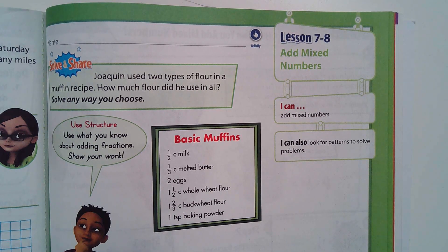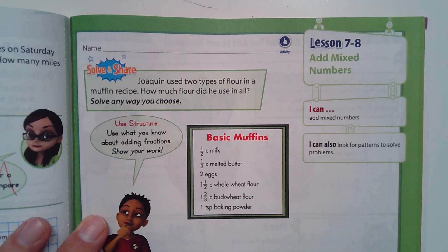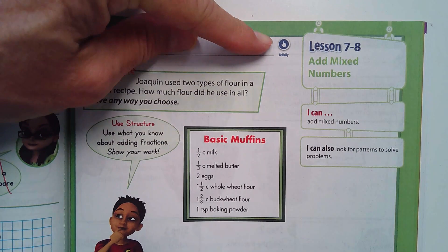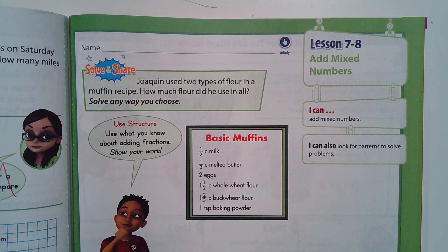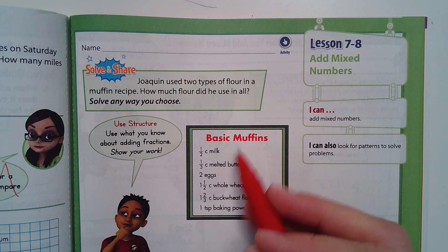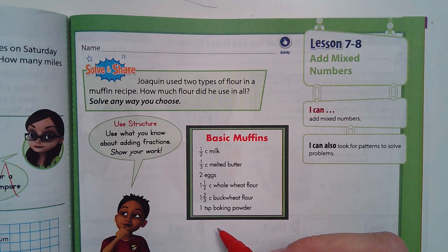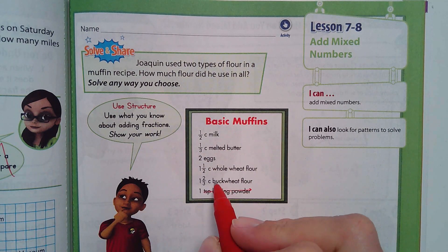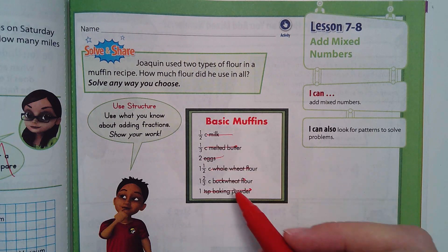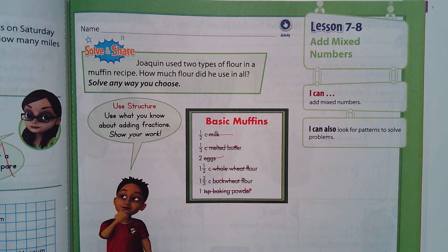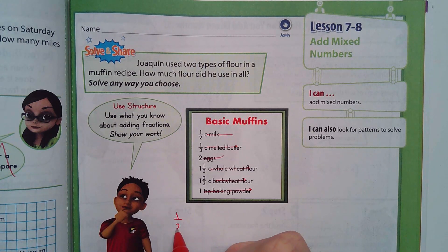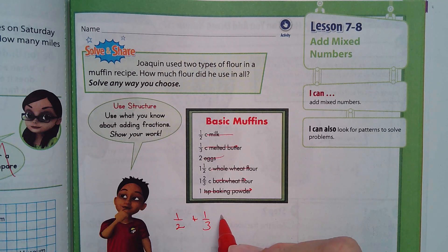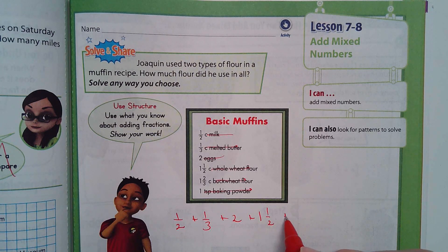Okay fifth graders, 7-8, that's where we are — we're adding mixed numbers. I'm looking at this first question and I just wanted to show you guys something. If we were to add up all these fractions — let's disregard what they represent: milk, eggs, baking powder, flour — somebody just asked you to add all these fractions. So what have we got? We've got one half, we have one third, plus one and one half, and then plus one and two thirds.